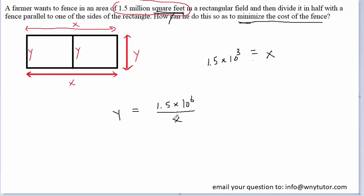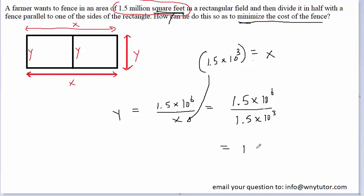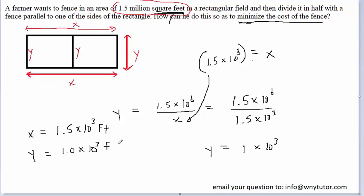Finally, we still have to find the value of y. Since y equals 1.5 times 10 to the 6th divided by x, we substitute our value of x. That gives us 1 times 10 to the 3rd for the value of y. So the final answers are: x, the length, equals 1.5 times 10 to the 3rd feet, and y, the width, equals 1 times 10 to the power of 3 feet. These two values will indeed minimize the cost of the fence.